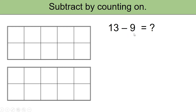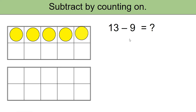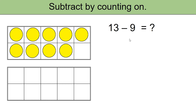Since we are using the approach of counting on, let's begin with 9 and set up 9 counters: 1, 2, 3, 4, 5, 6, 7, 8, 9. Remember, we started off with 9 and we need to reach 13.